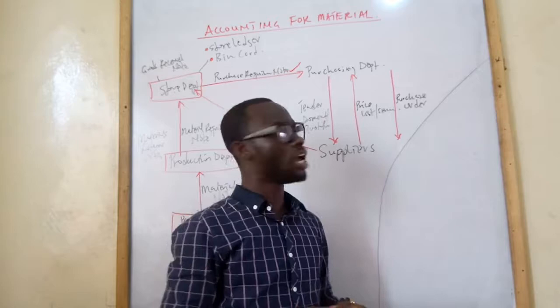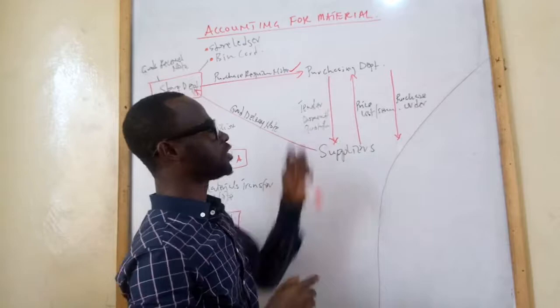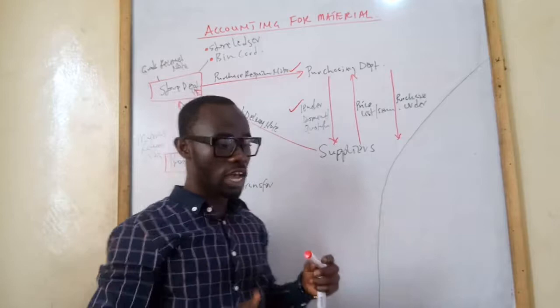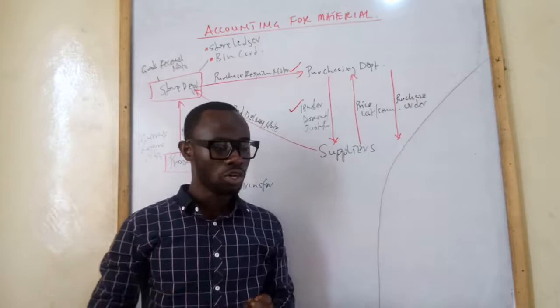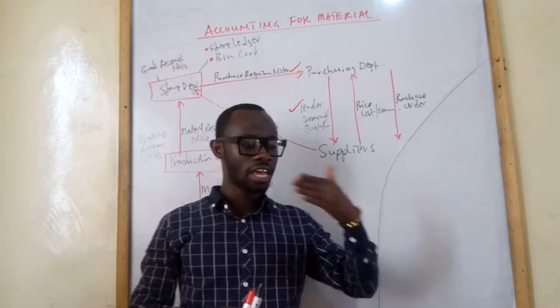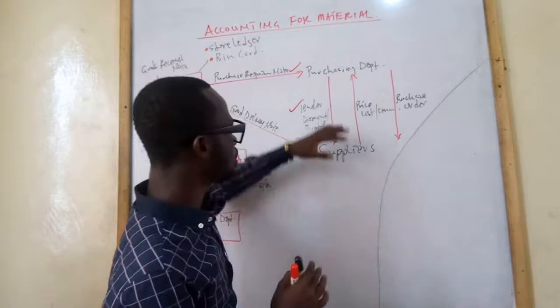Upon receipt of the purchase requisition note, the purchasing department sends out a tender document or quotation to suppliers. The tender document or quotation is prepared by the purchasing department to obtain the suppliers' terms of supply — including their price lists, delivery time, quantity they can deliver, quality of their products, and reliability of their services.